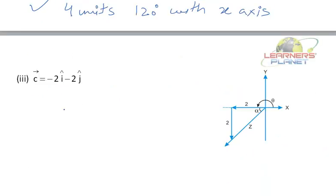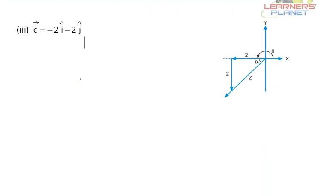So you will specify b as 4 units and the direction you will specify as 120 degrees with the x axis. This is how you are going to specify. Now let us look at the third problem. You are given as c vector minus 2 i cap and minus 2 j cap. That means it is lying in the third quadrant. So this is also 2 and this is also 2.